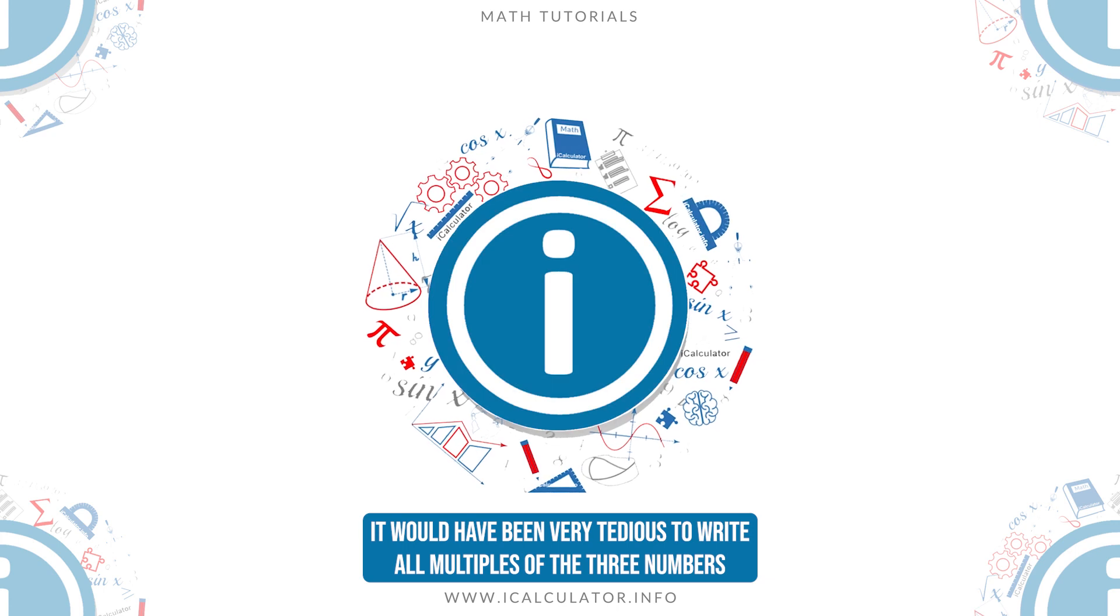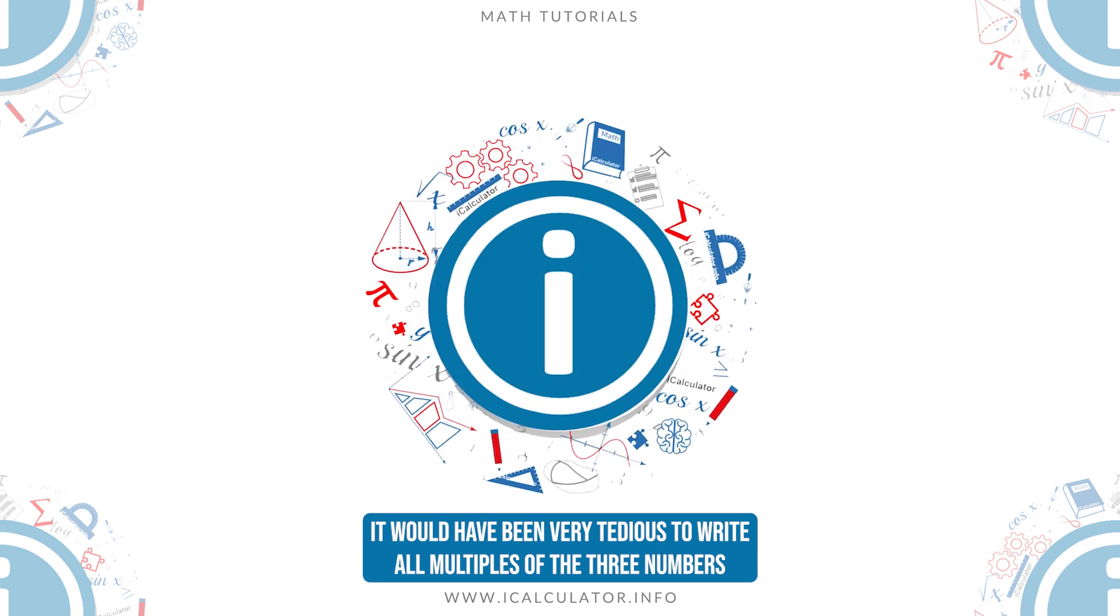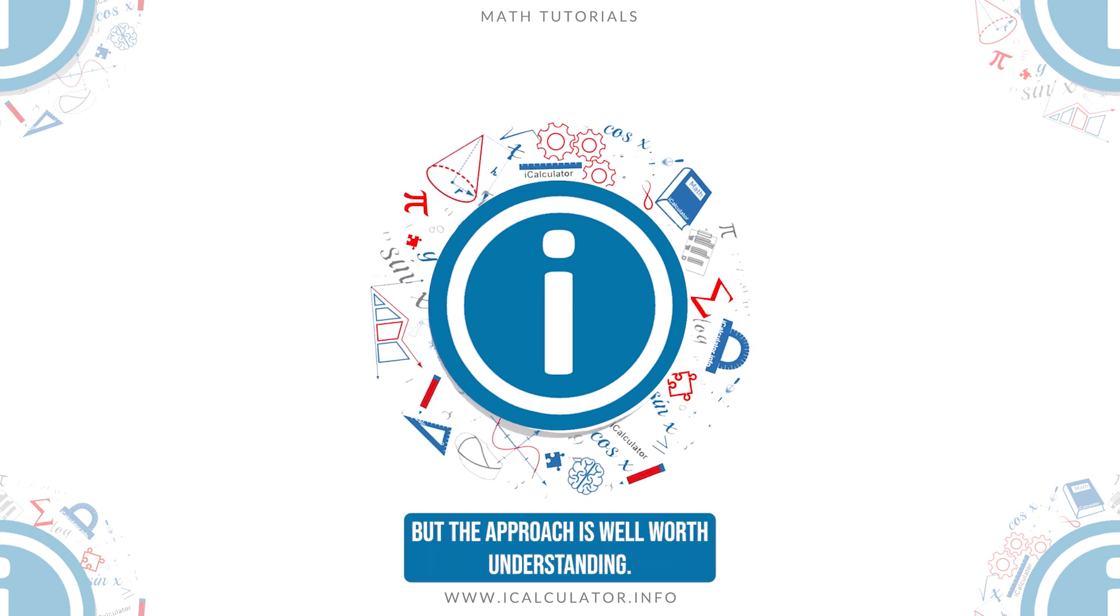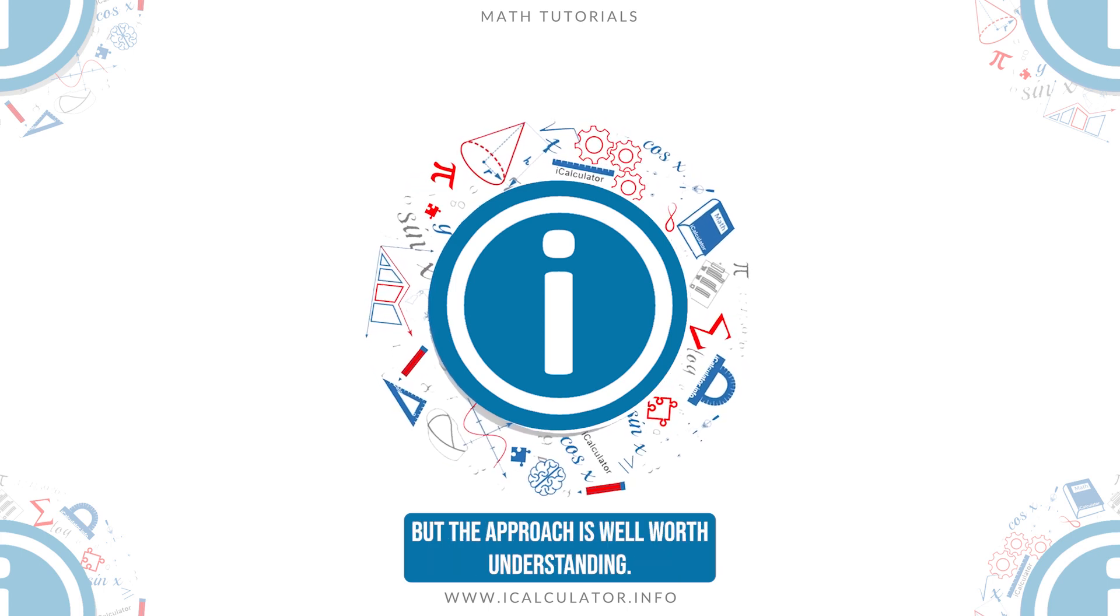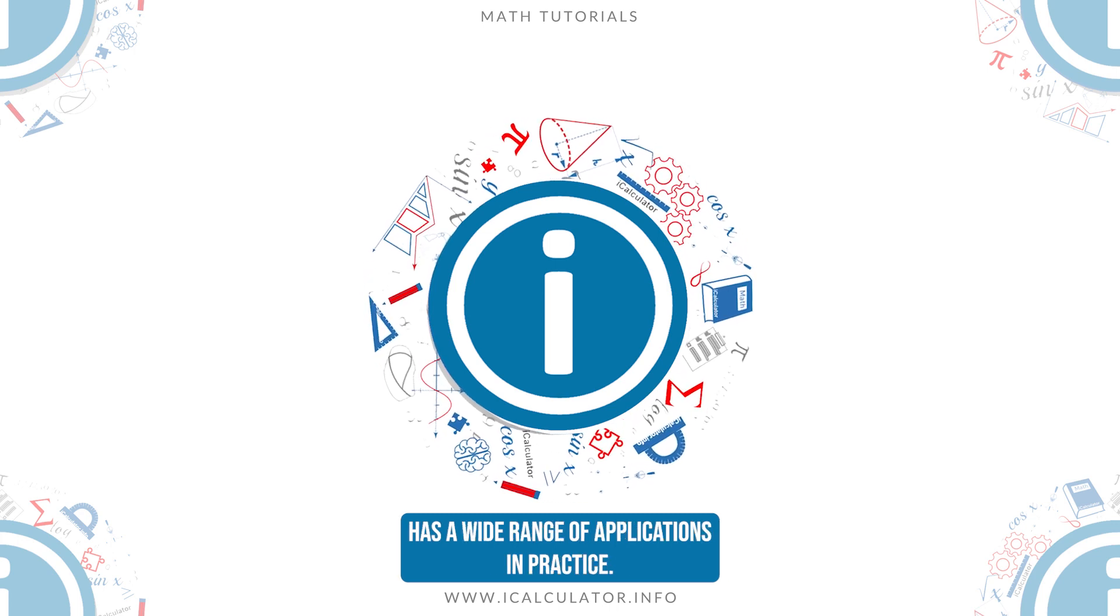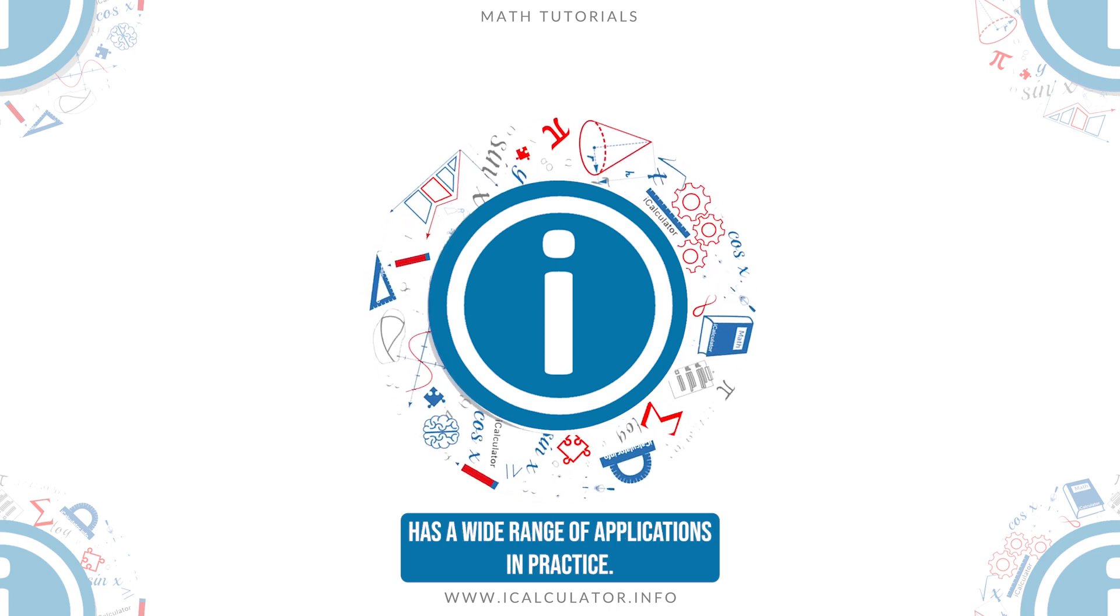It would have been very tedious to write all multiples of the three numbers and then look for the least common one, as we did earlier for 8 and 12, but the approach is well worth understanding. The least common multiple of two or more numbers has a wide range of applications in practice. For example,